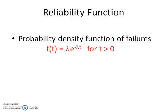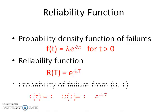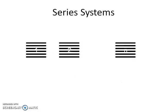The probability density function of the failure is lambda e to the power minus lambda t. Reliability function is e to the power minus lambda t. And probability of failure from 0 to t is 1 minus e to the power minus lambda t.